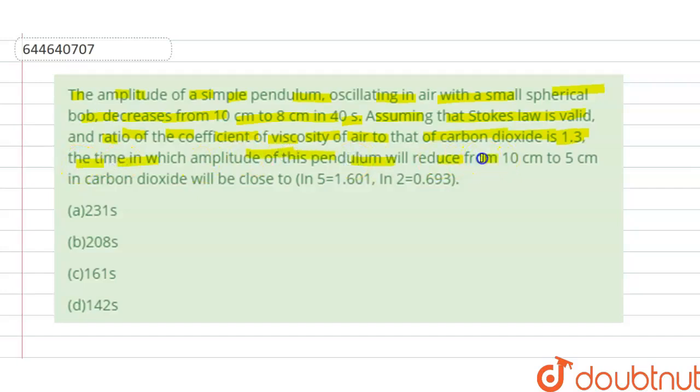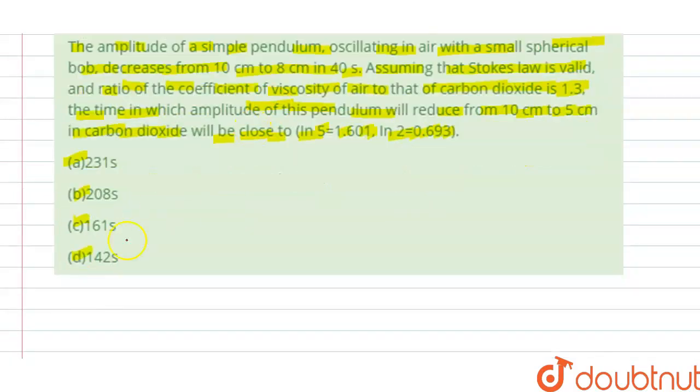the time in which amplitude of this pendulum will reduce from 10 centimeter to 5 centimeter in carbon dioxide will be close to - log 5 is 1.601 and log 2 is 0.693. Options A, B, C, D are given, so we have to find which option is correct.